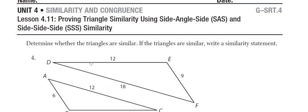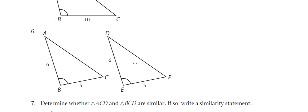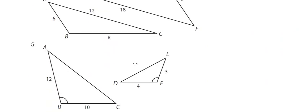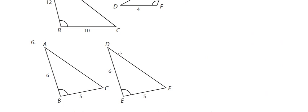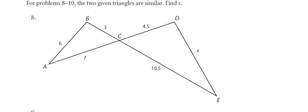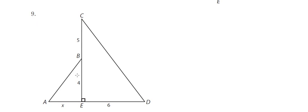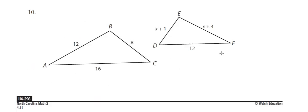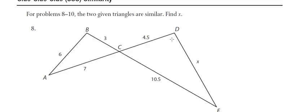Then go on to questions 4, 5, and 6 — they ask you to use those similarity rules to determine whether the triangles are similar and, if they are, to name the triangles. For number 7, determine whether they're similar and write a similarity statement, again being careful of overlapping triangles. For numbers 8, 9, and 10, you're finding the value of X. Note that included angles may be congruent as vertical angles, and pay attention to how the pieces overlap — you may need to add segment lengths.